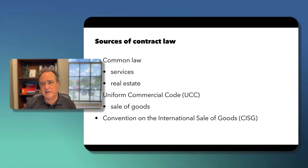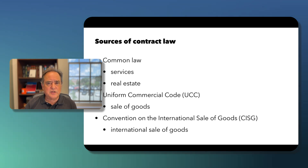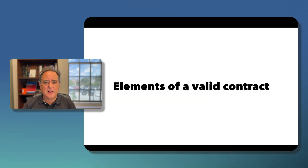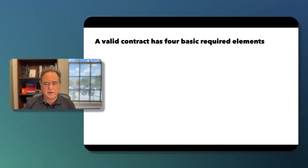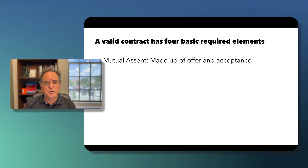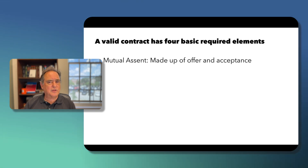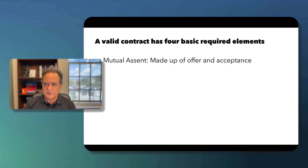Finally, there is the Convention on the International Sale of Goods, also known as the CISG, which covers the international sale of goods between merchants — people who are in the business of buying and selling goods. Let's talk about the elements of a valid contract. We'll go over the four basic required elements and then spend some time discussing each one in more detail. In this lecture, we'll cover the first and second.